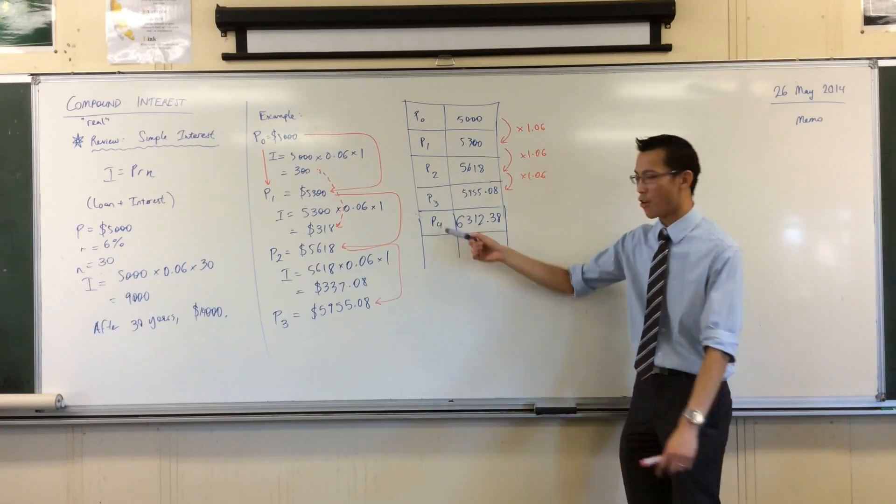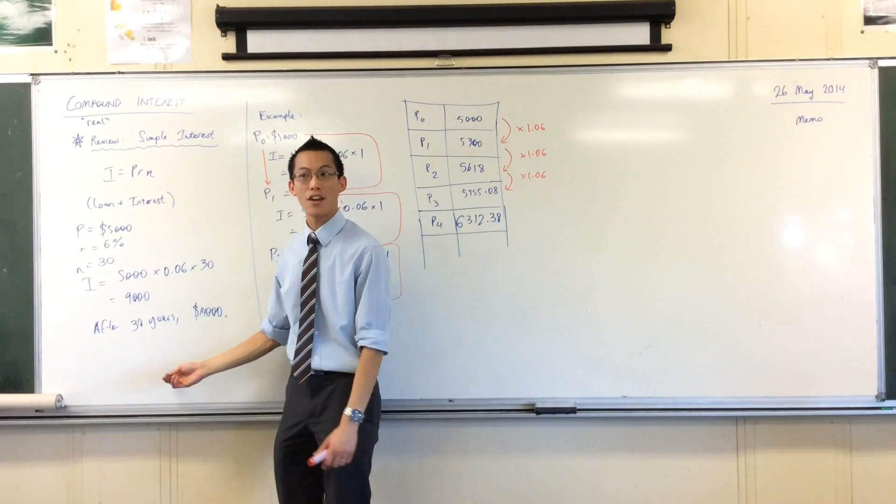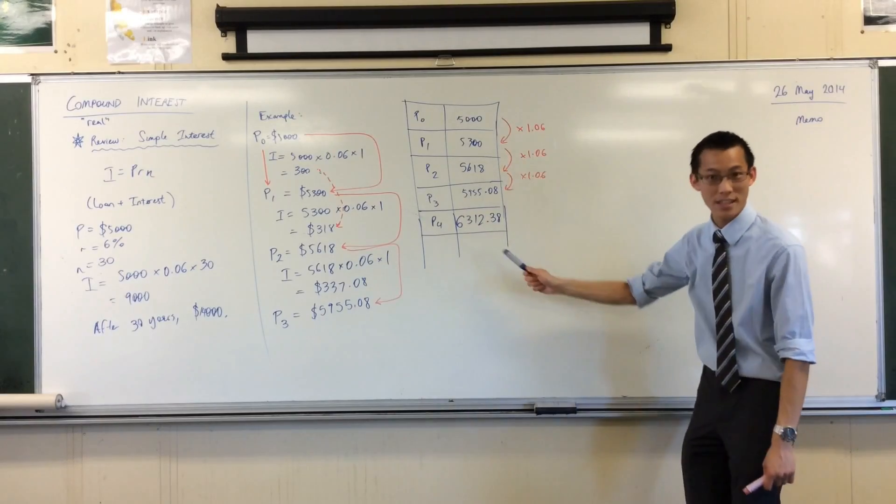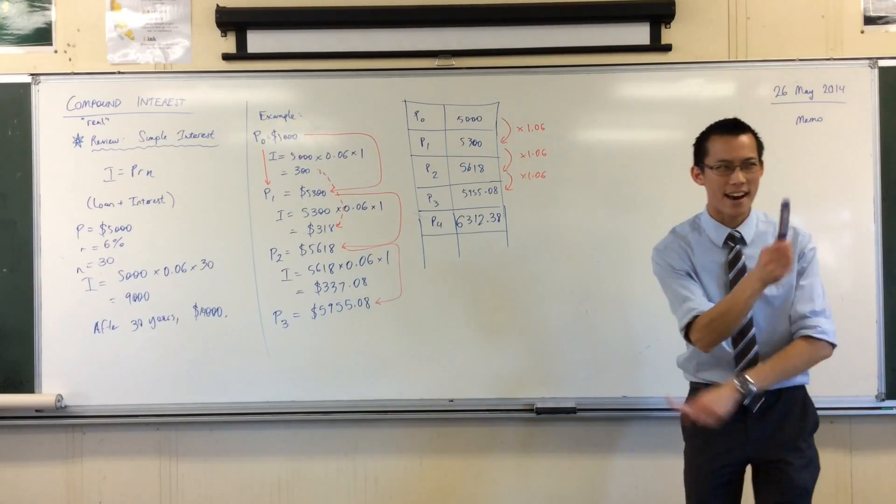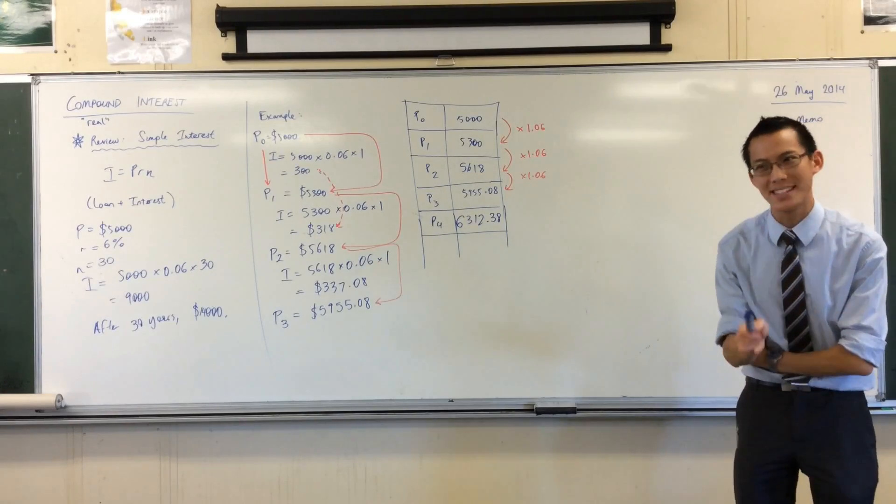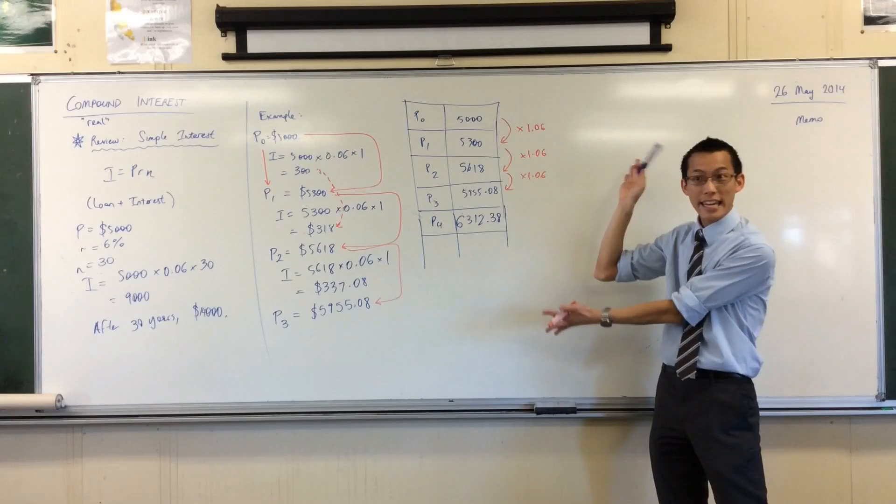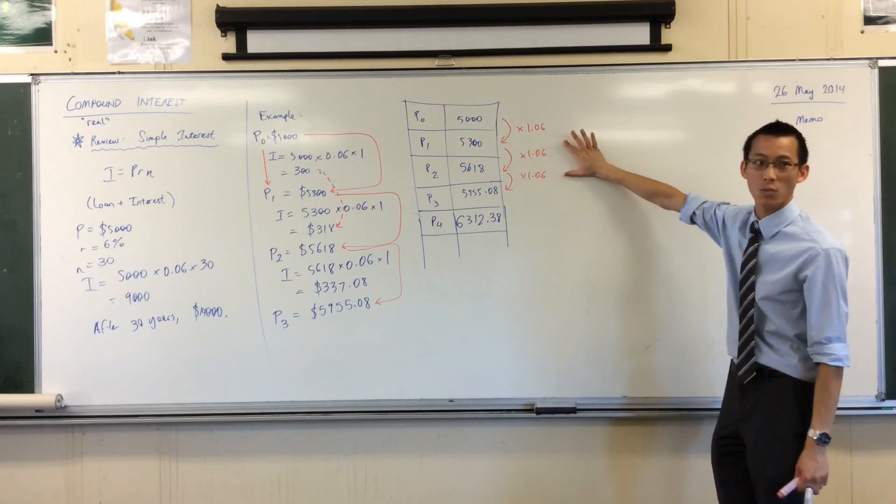Okay? Now, I don't want P4 or even 5, 6, 7, or 8. I want to know what happens after 30 years. So just like I did here, I could do all these steps. I could multiply by 1.06 and 1.06 and 1.06 and 1.06 again and again and again. But in number skills, you learn how to do this all in one hit, rather than doing it one at a time.